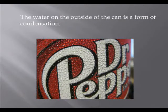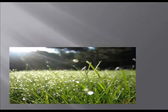The water on the outside of this can is a form of condensation. Condensation occurs when the water vapor goes up into the sky and it's cooler up there, so that gas turns back into a liquid. Therefore it condenses together. Condensation is the water vapor which turns into clouds.